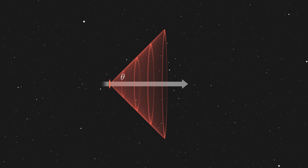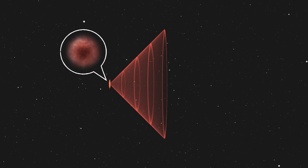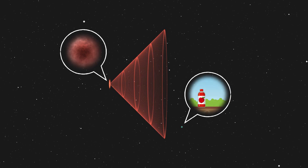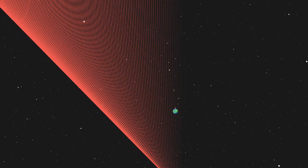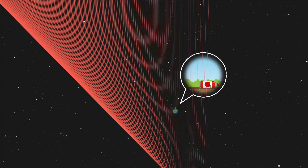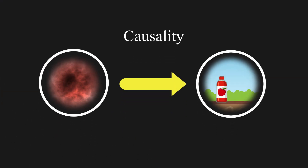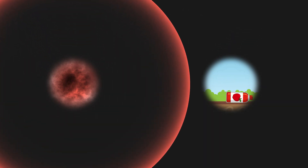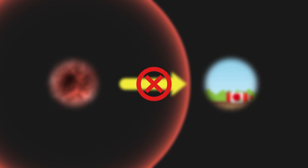The consequence of an event, such as the explosion of Proxima Centauri, can only affect another one — for example, the falling down of a bottle on Earth — until the bottle enters the light cone of Proxima Centauri. Causality, the effect that one event can trigger another event, is determined by the speed of light. If the bottle falls before the light from the explosion of Proxima Centauri can reach it, there is no causal relationship between the two events.